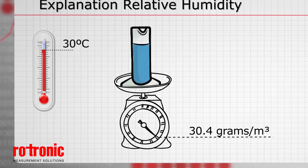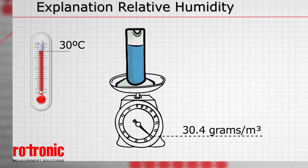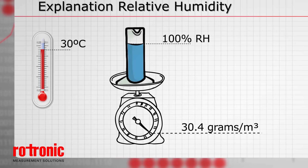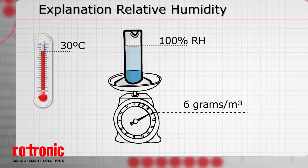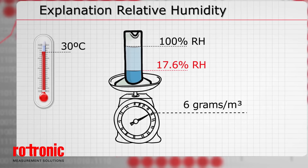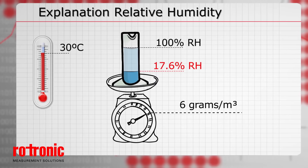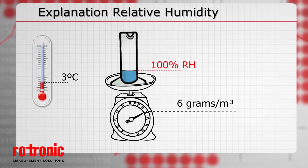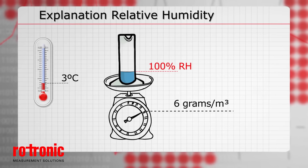Relative humidity states in percent to what extent the air is saturated with water vapor. At 30 degrees Celsius, 6 grams of water vapor equals a relative humidity of 17.6 percent. And at 3 degrees Celsius, 6 grams of water vapor equals a relative humidity of 100 percent.